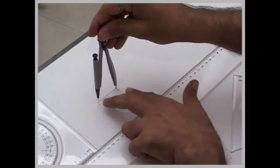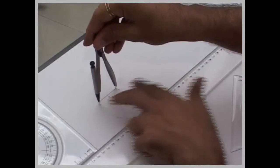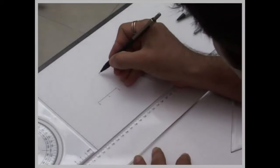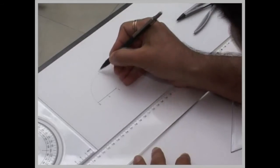You take radius as 1, 2, 3. Draw an arc. Wherever it cuts, that is 2 dash.